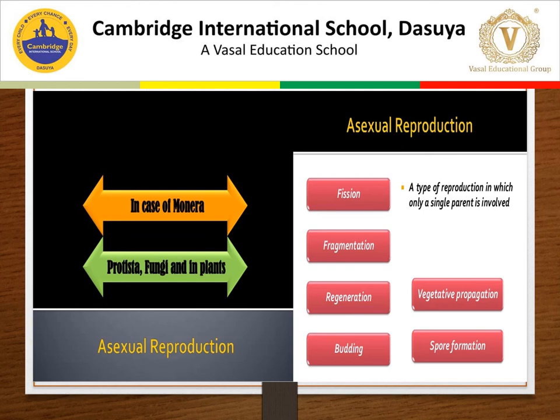In asexual reproduction, only one parent is needed to produce a new organism. The characteristics of asexual reproduction are: it is uniparental — one parent is involved; it does not involve fusion of gametes; all cell divisions are mitotic or amitotic; it is a method of rapid multiplication; daughter organisms are genetically identical to the parent; and it is mostly found in lower or unicellular organisms. There are different modes of asexual reproduction: fission, fragmentation, regeneration, budding, vegetative propagation, and spore formation. All these we will discuss in a separate video or in live class.